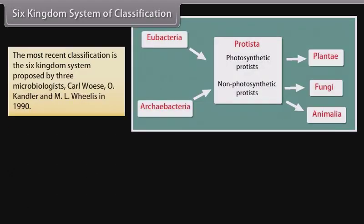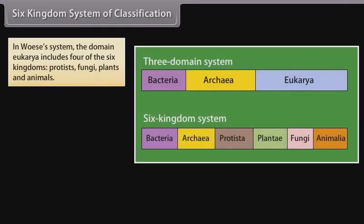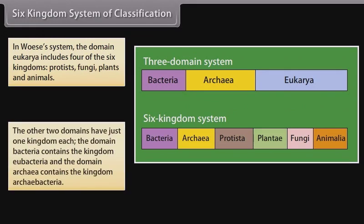Six kingdom system of classification: the most recent classification is the six kingdom system proposed by three microbiologists — Carl Woese, O. Kandler, and Emil Wheelis in 1990. They proposed that all organisms be divided into three major groups called domains above kingdom level: Eukarya, Bacteria, and Archaea. The domain Eukarya includes four of the six kingdoms: Protists, Fungi, Plants, and Animals. The domain Bacteria contains the kingdom Eubacteria, and the domain Archaea contains the kingdom Archaeabacteria.